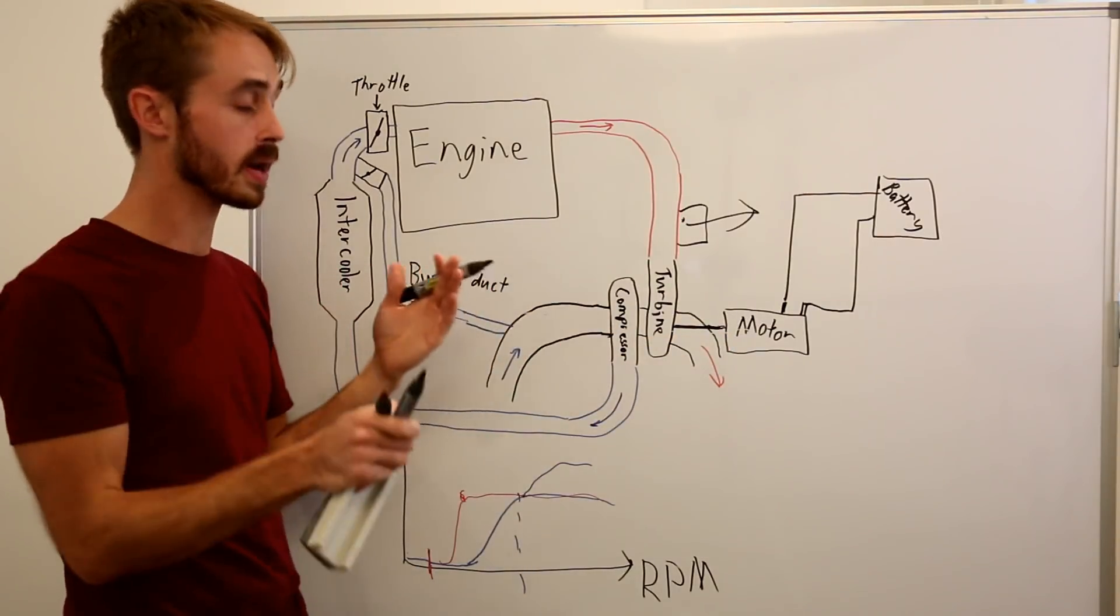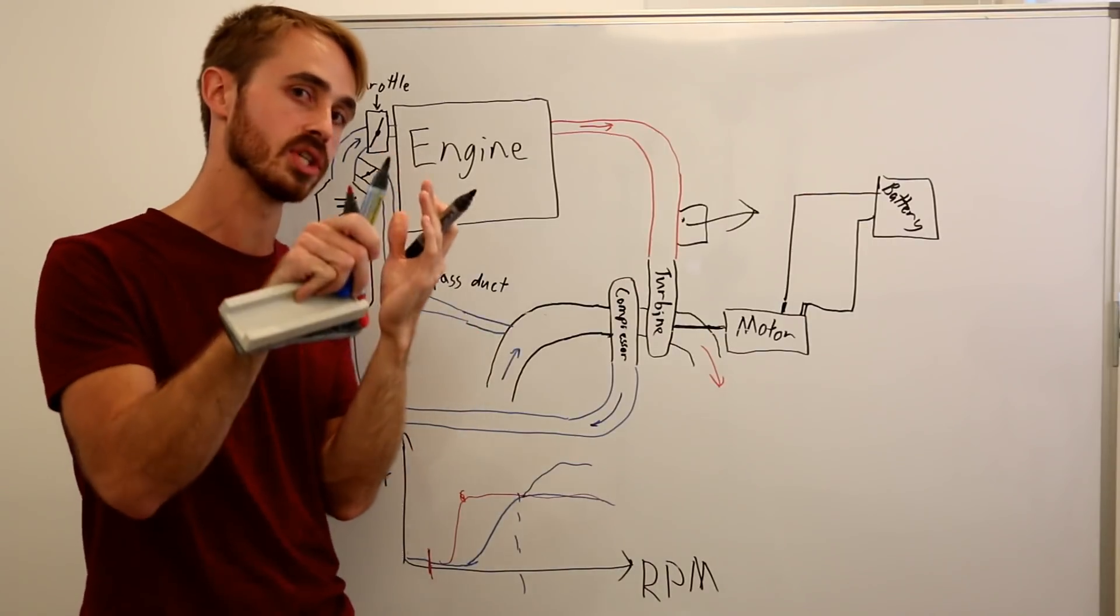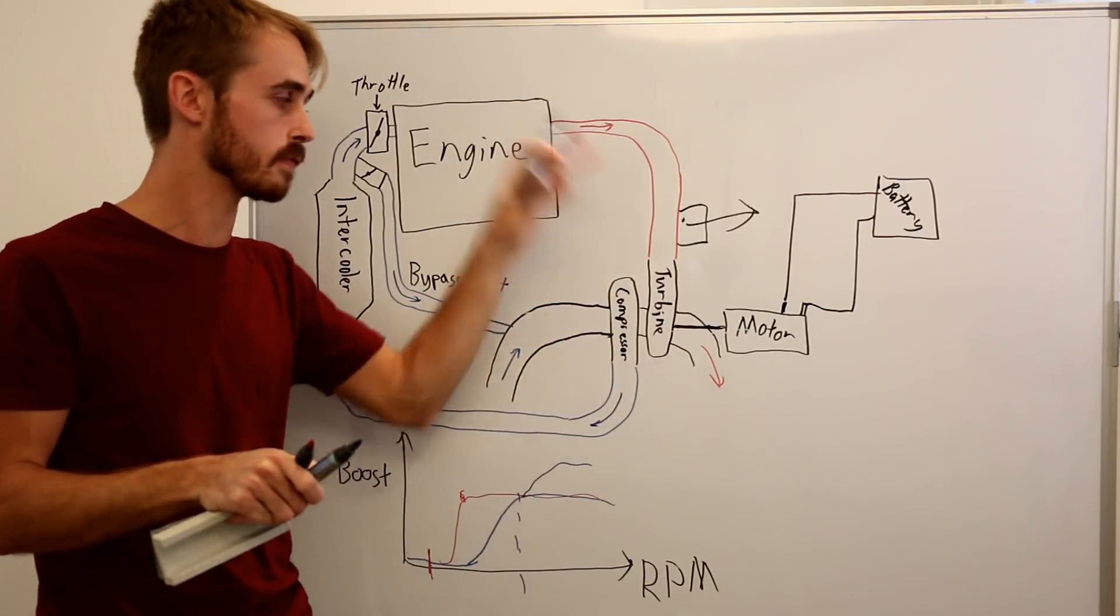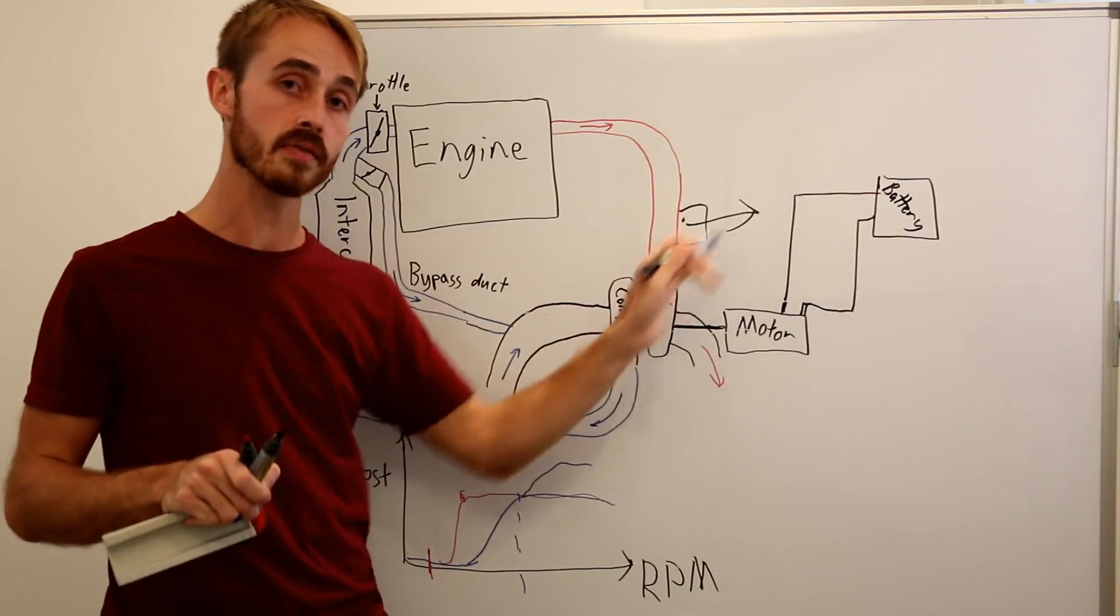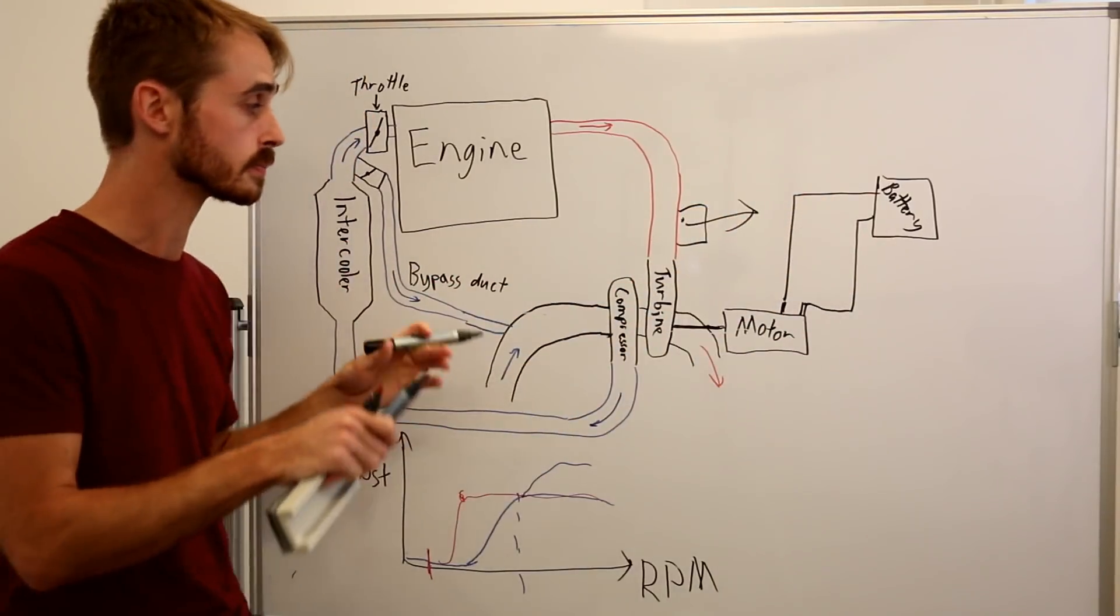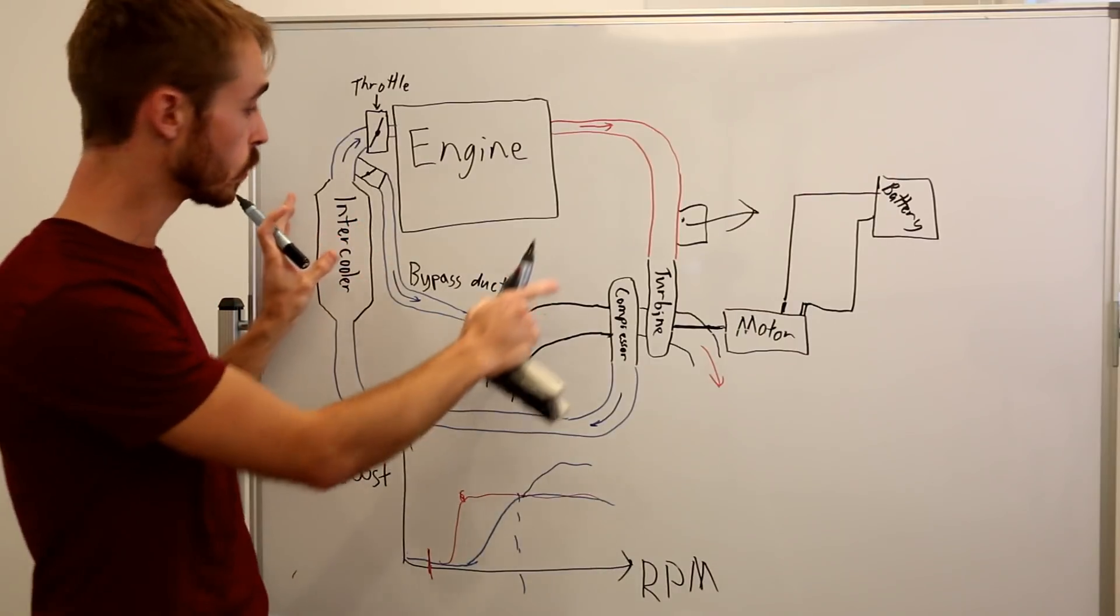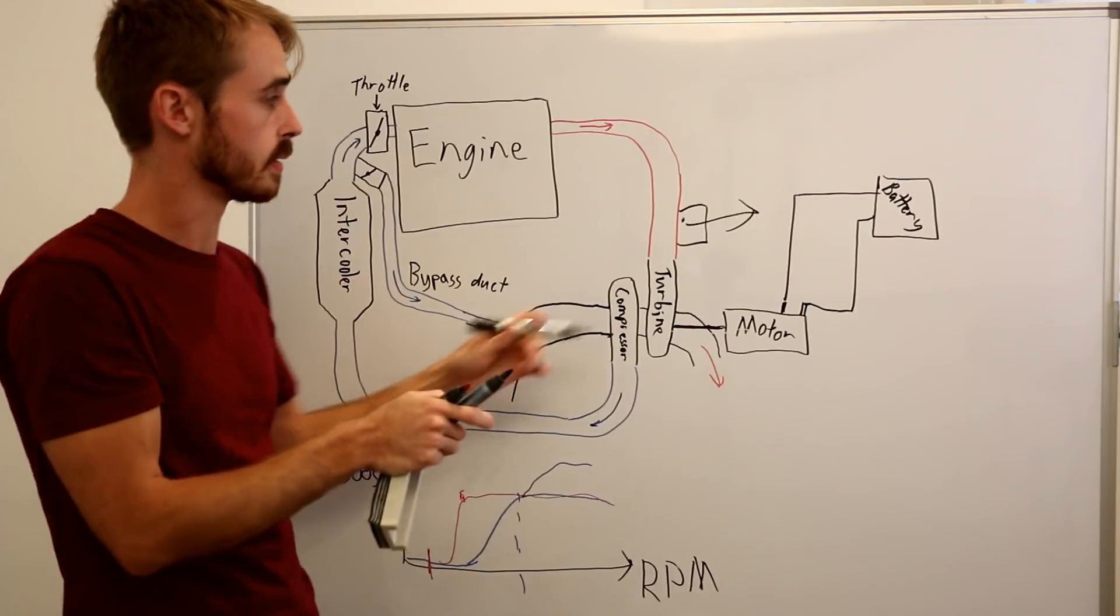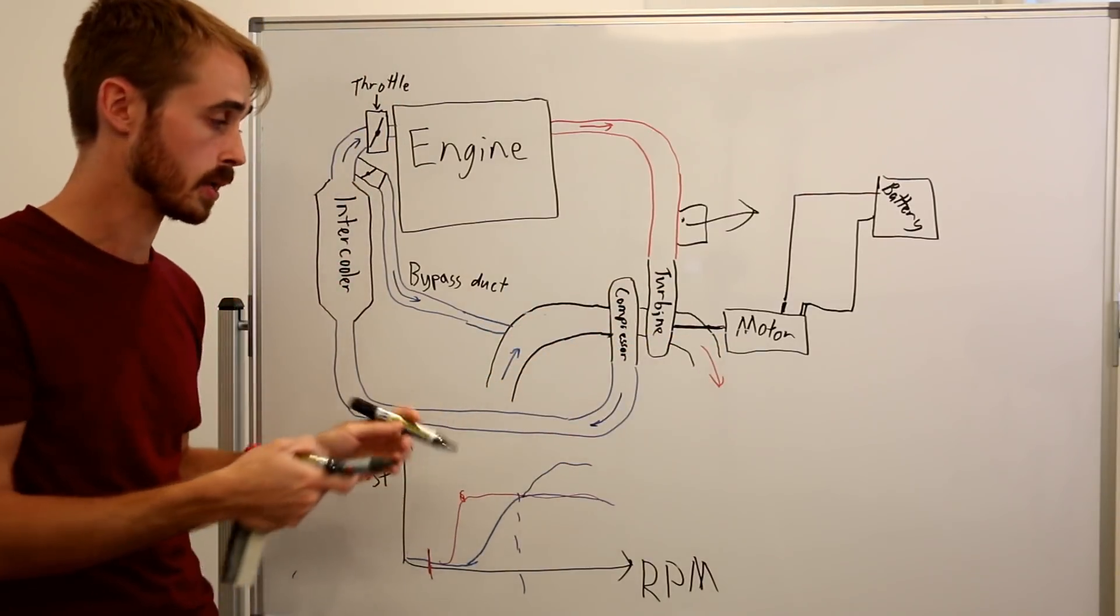So when we are under hard acceleration, and this is a bit counterintuitive because it's actually when the motor is generating peak power, we're trying to slow that turbo down because there's a big volume of exhaust gas. So when the motor is going hard, we're actually recovering energy to our battery. Then if we lift the throttle, we cut off the exhaust gas flow through the motor. Then what we do with that is we use the motor to spool this back up.